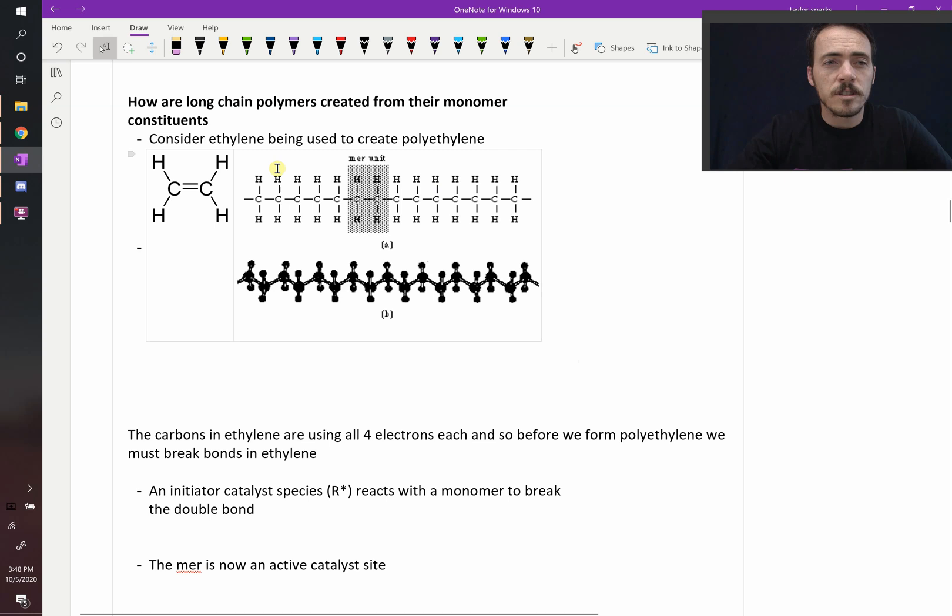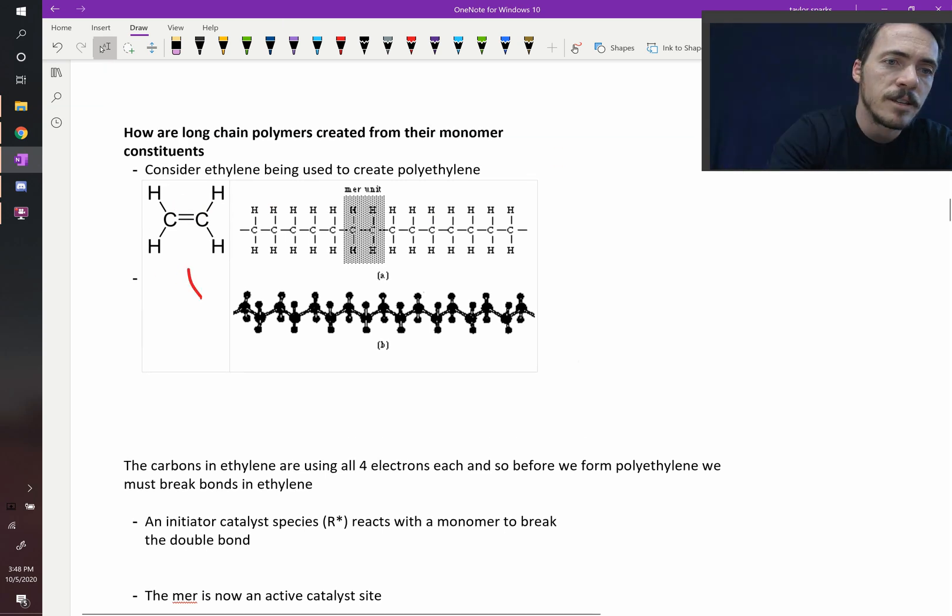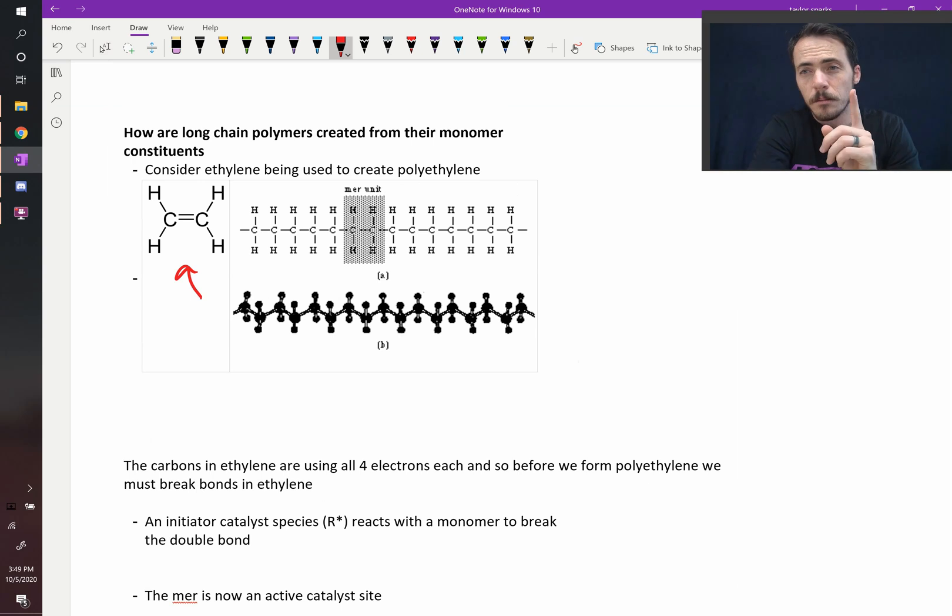But the molecule looks something like this. Here's the ethylene molecule over here. That's what it comes from. So this is what's called monomer. The monomer is a single monomer, the single part. We're going to then polymerize that monomer to form the polymer. And the polymer looks like this one over here.